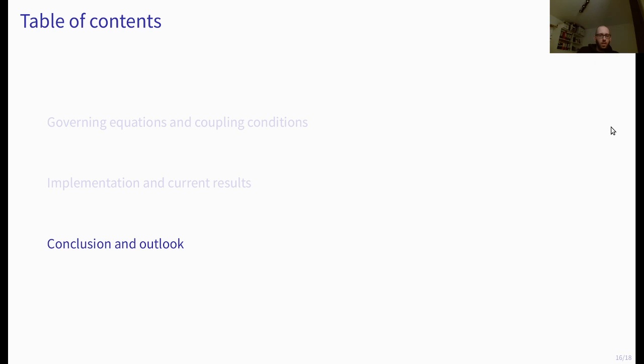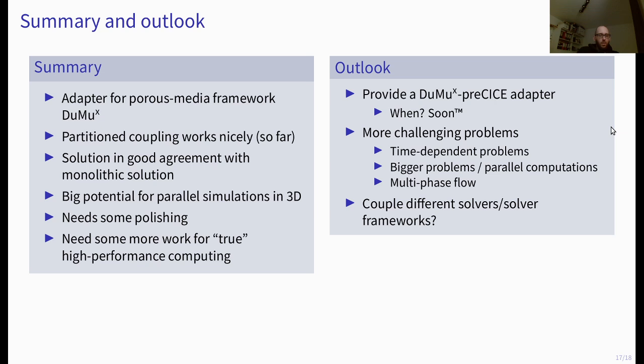So this brings me already to the end of my presentation. So what you've seen, we use a porous media flow framework DuMuX here and the partitioned coupling works very nicely here. We have very good agreement with the monolithic solutions and we also see very big potential for parallel simulations in 3D since we then also can facilitate the parallel features of preCICE. The code now needs some more polishing, it has some bugs and it's not super great yet. And it also, what I didn't talk much about, it will need some extra work for true high-performance computing since we don't really have good iterative solvers for the flow domain in DuMuX at the moment.